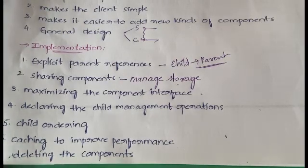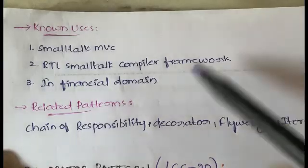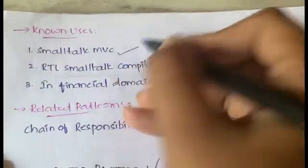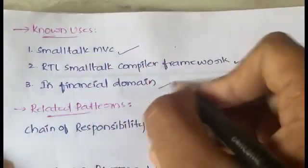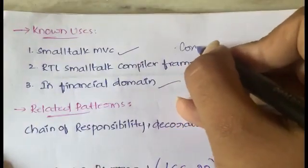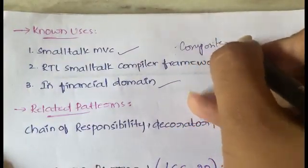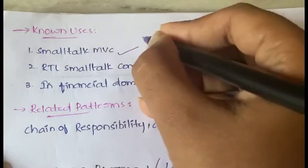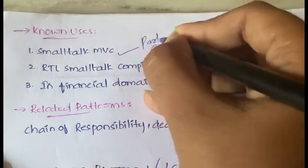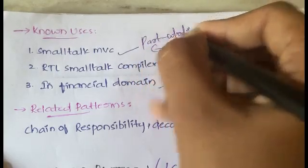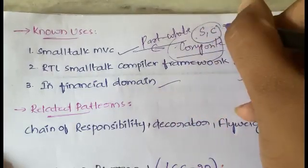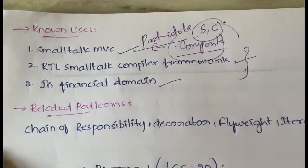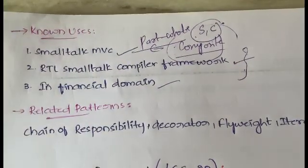Coming to known uses: the Composite pattern is used in the Smalltalk MVC framework, the RTL Smalltalk compiler framework, and in the financial domain. The main concept is that it represents part-whole hierarchies and provides a way to treat both single components and composite components uniformly.